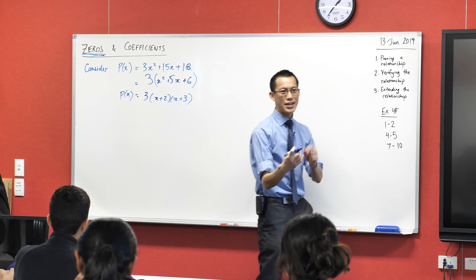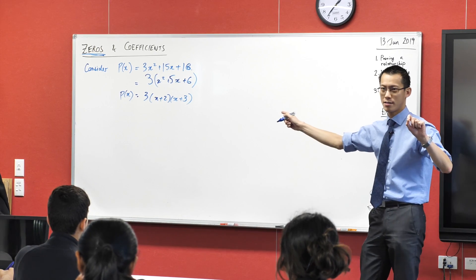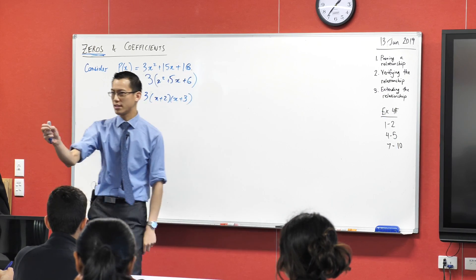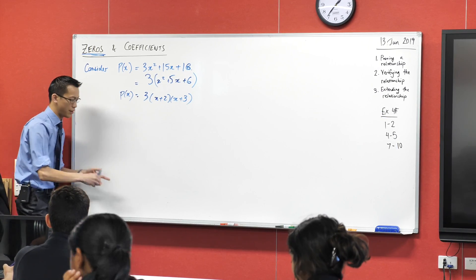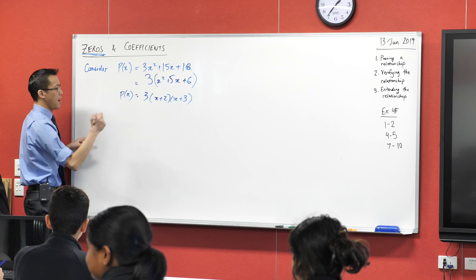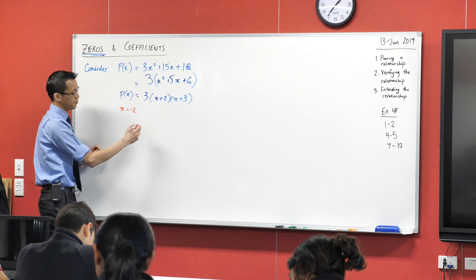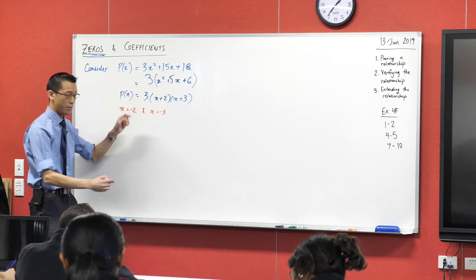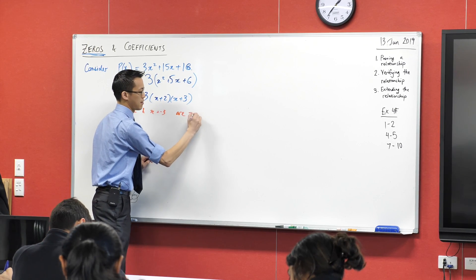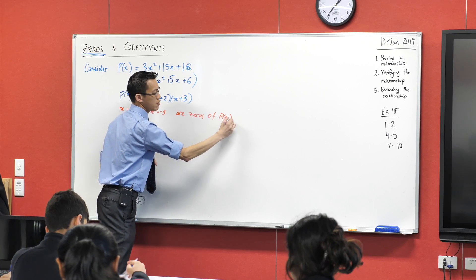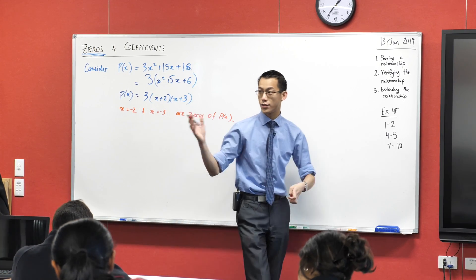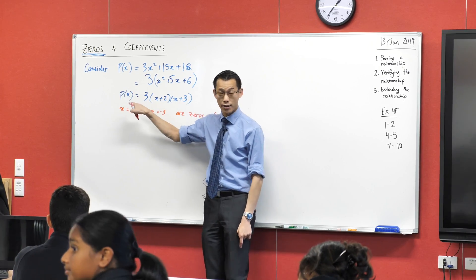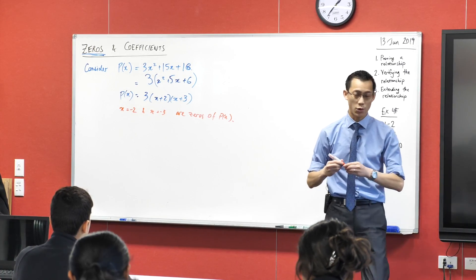It's a bit weird to say negative 2 is a zero of this, but why would that actually be a sensible name? They make the whole thing zero. They make the whole thing zero. Please mark that, right? Let's actually write that down. I'm going to put it in a different color just to highlight it, right? I'm going to say x equals negative 2 and x equals negative 3 are zeros of this polynomial. They are zeros of p of x because if we took negative 2 and negative 3 and substituted them in, p of negative 2, p of negative 3, then you get zero out of this. That's why we call them that, okay?